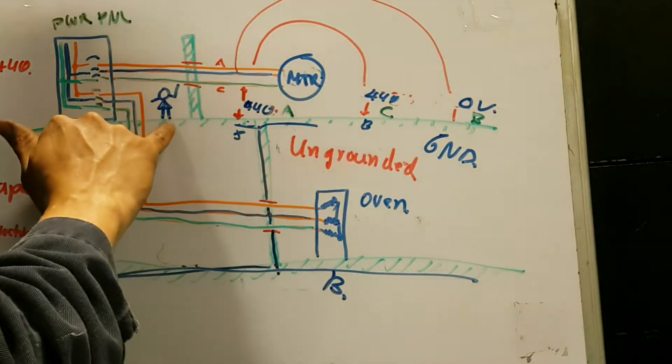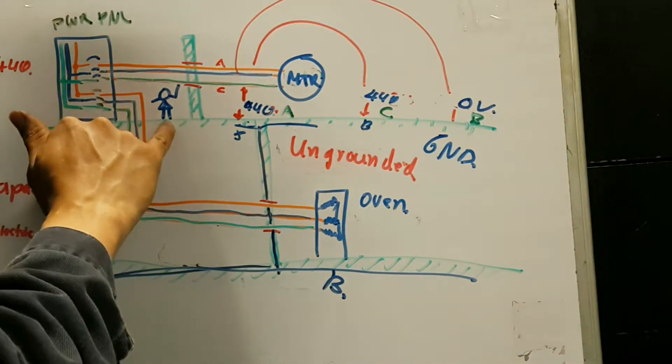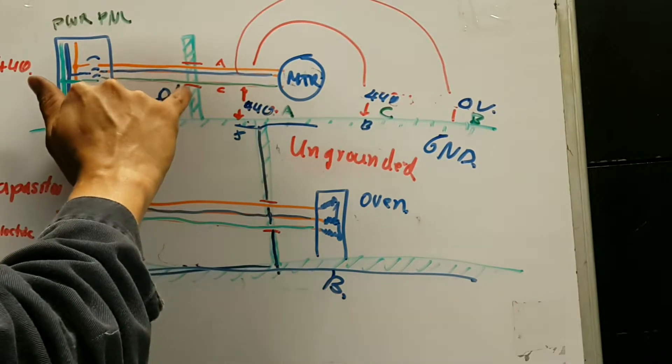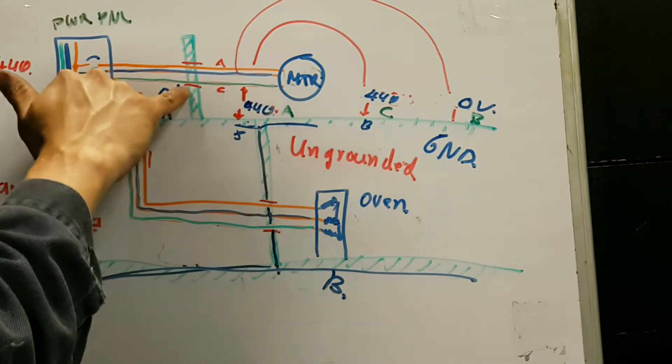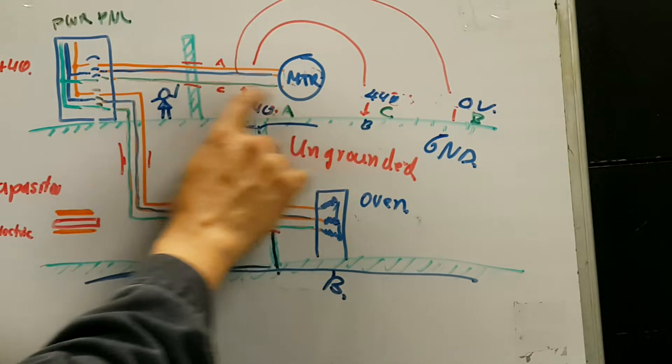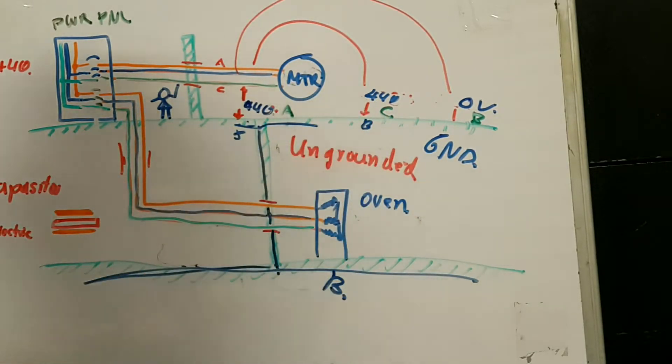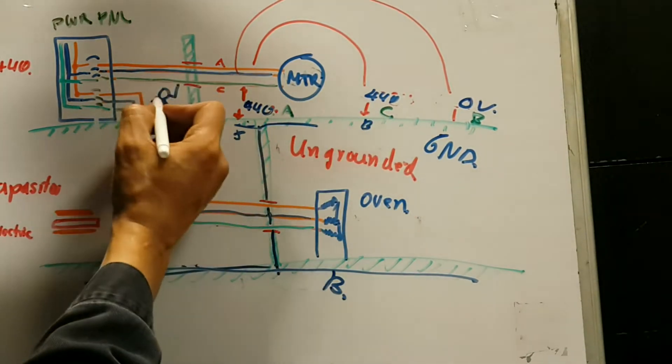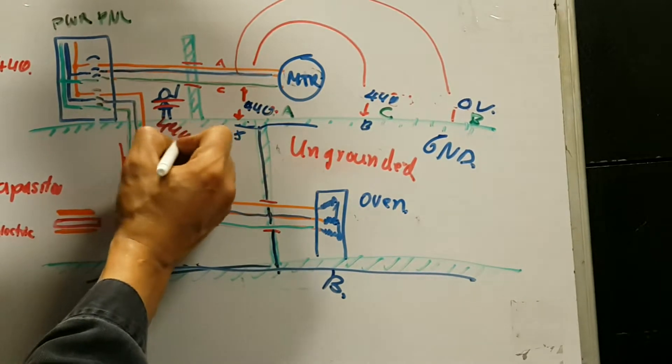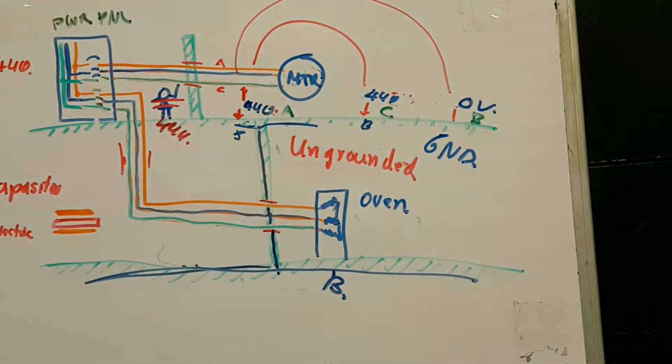Now, what happens if you are standing on the ship barefooted and you touch the Charlie conductor, the C phase? Well, we just learned that now you're not getting shocked by 220, but you're getting shocked by 440 volts. That definitely makes it dangerous in that situation.